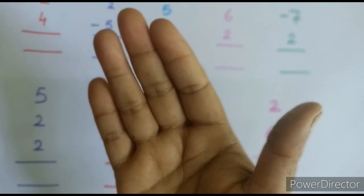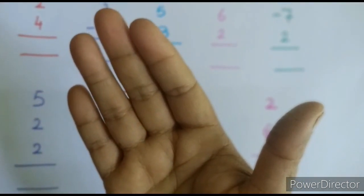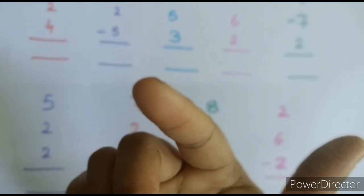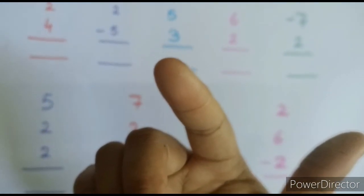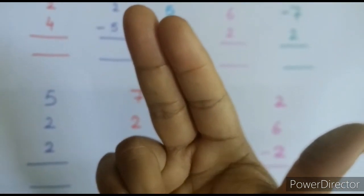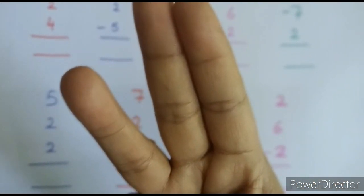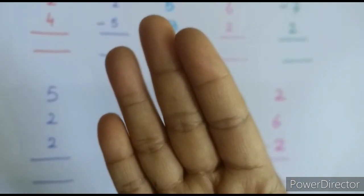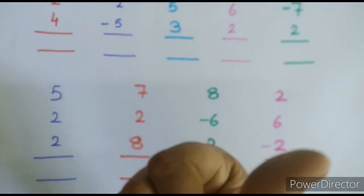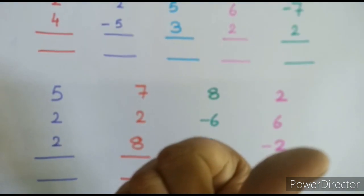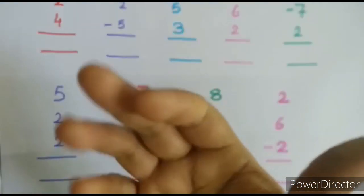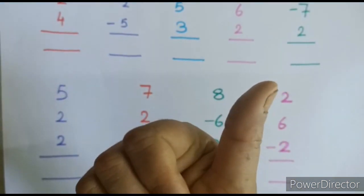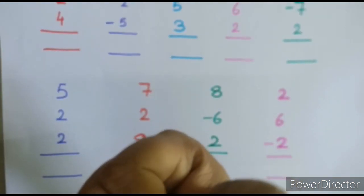Now I am going to show you how to represent 0 to 9 with the help of fingers. For 1, we open 1 finger. For 2, we open 2 fingers. For 3, we open 3 fingers. For 4, we open 4 fingers. For 5, we just open our thumb — we close all the fingers and open only the thumb finger.